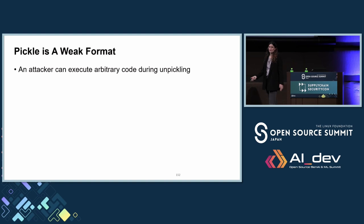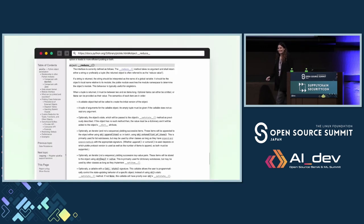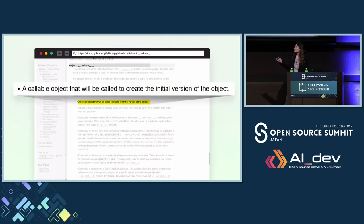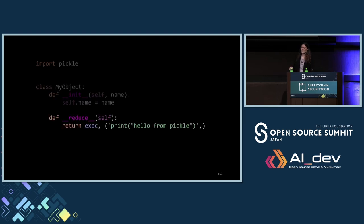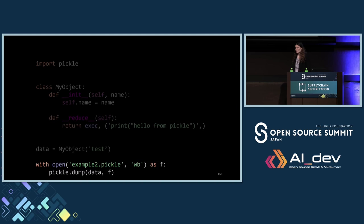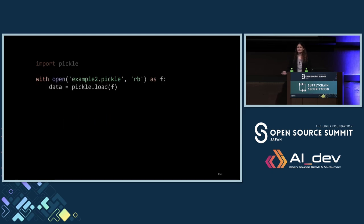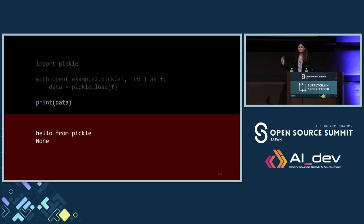Pickle is a weak format — it's been known for years, it's not something new. But an attacker can run code using unpickling. When you look at the documentation, there is a function called reduce, which basically takes two arguments: the first one is a callback object — it can be eval, print, exec, whatever you want — and a tuple. So in this class, all I'm doing is exec 'print hello from pickle'. Now let's open the file, dump it, load it, print it. And I'm getting 'hello from pickle.' Also working with classes.